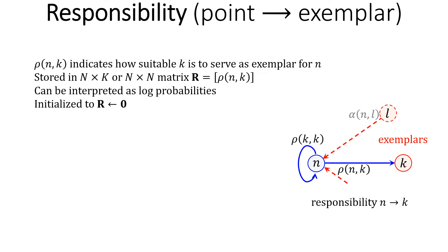The responsibility rho_nk indicates how suitable k is to serve as an exemplar for n. As a reminder, each data point is a potential exemplar. So all responsibilities can be stored as an n by n matrix R. And this matrix of responsibilities is initialized to all zeros by the algorithm.